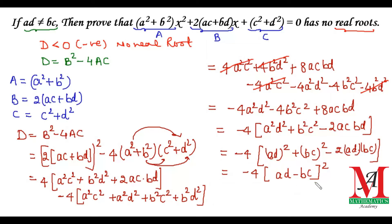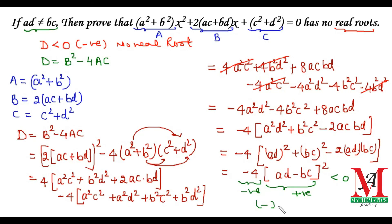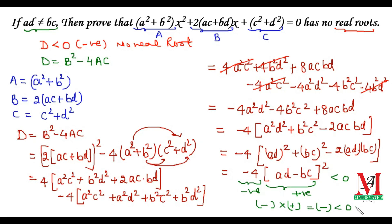The condition given is that ad is not equal to bc, so ad and bc cannot cancel each other, meaning (ad - bc)² is a positive value. Therefore, minus 4 times (ad - bc)² is always negative, which is less than zero. Since D is less than zero, there are no real roots. Hence this equation has no real roots. Thank you friends.